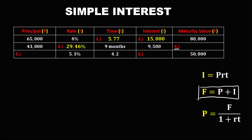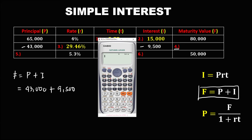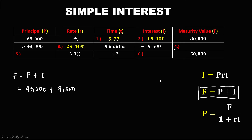To find the maturity value, we use MV = principal plus interest. The principal is 43,000 and the interest is 9,500. So 43,000 plus 9,500 equals a maturity value of 52,500.